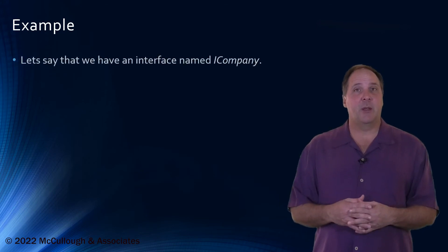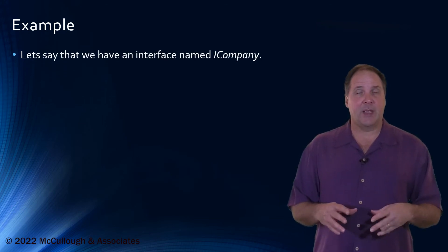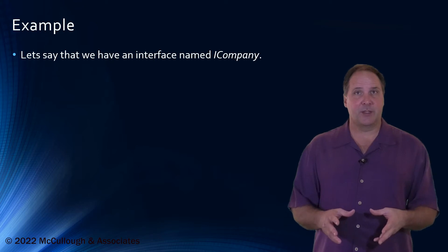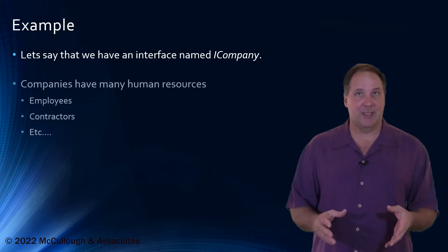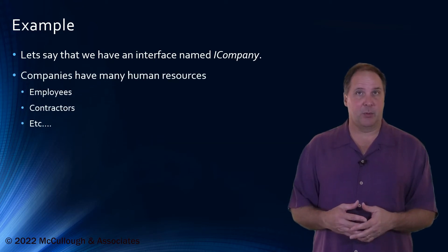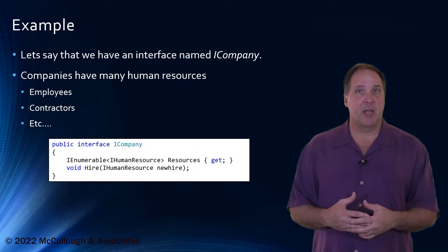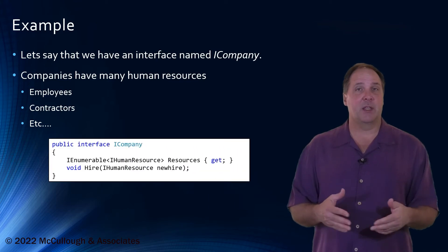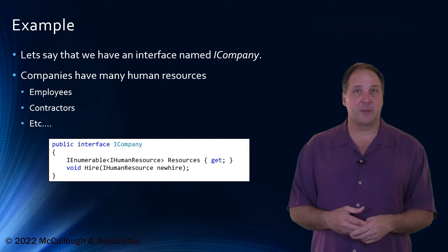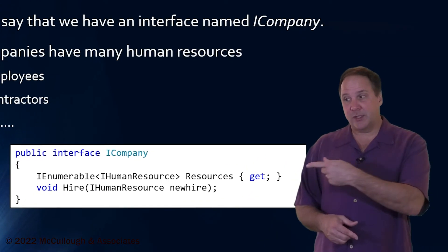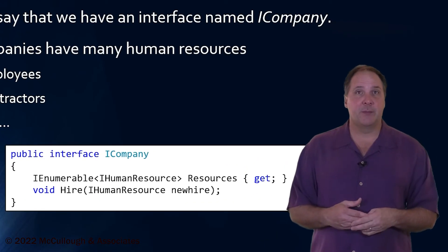Let's take a look at an example. Let's say that we're going to implement an interface called iCompany. The iCompany interface defines typical company things like a list of employees or human resources, as well as the ability to hire new human resources. This is our interface, and it's a pretty typical interface.